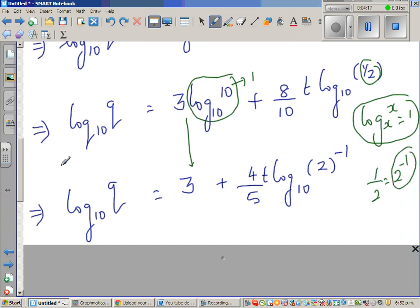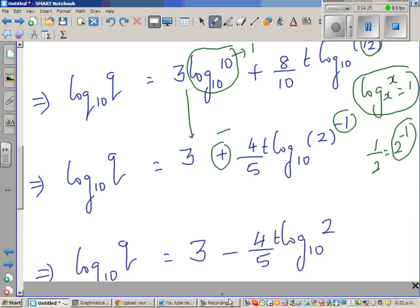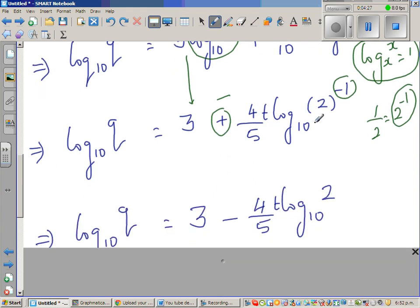So applying again the power rule, this power drops down. So the next step, this will become negative. That's how this became negative 4 fifth t times log of 2 to the base 10. So let me remove the veil now.